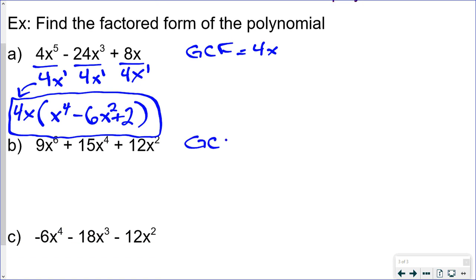Two more examples. First, find the greatest common factor of 9, 15, and 12. The factors of 15 are 5 and 3. Since 5 isn't a factor of 9 or 12, the greatest common factor of the coefficients is 3. The biggest power of x we can divide out is x squared — you look for the smallest power of x present, and that's what you can factor out.